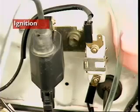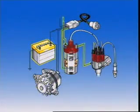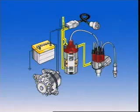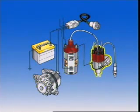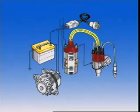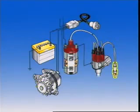This section examines ignition. A basic ignition system consists of the battery, low tension cables, the ignition coil, distributor, coil high tension cable, spark plug cables, and spark plugs.